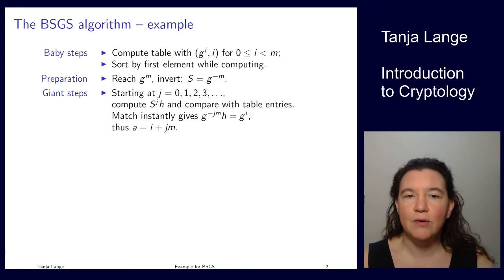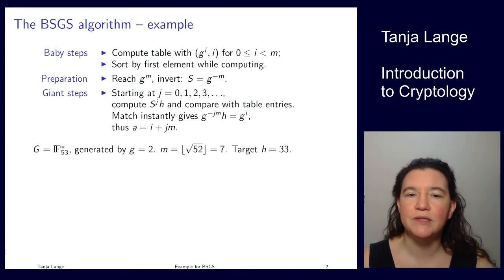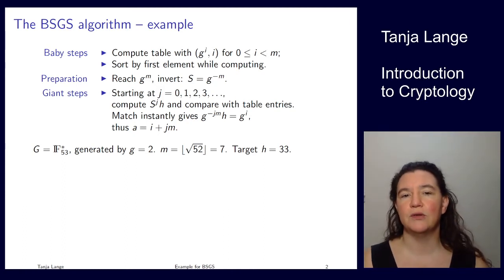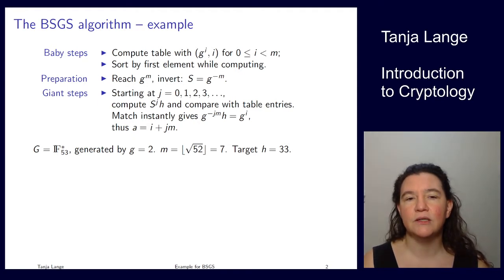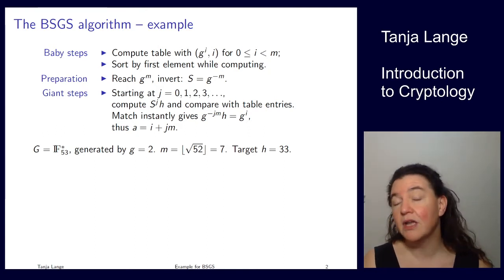As an example, I'm choosing the finite field of 53 elements and the entire multiplicative group. A generator of this is 2, and we're going to look at some target. So somebody else has public key 33, and you want to figure out what secret key Alice has. We want to solve the discrete logarithm problem.